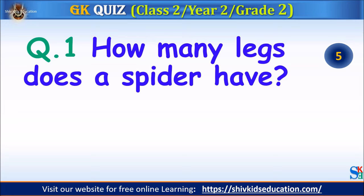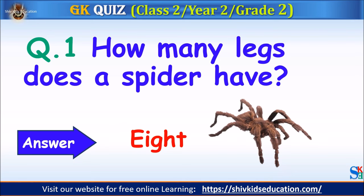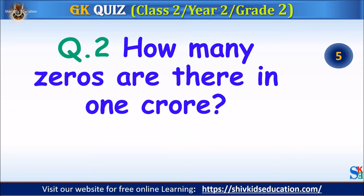Question 1: How many legs does a spider have? Your time starts. The answer is 8. Question 2: How many zeros are there in one crore? Your time starts. The answer is 7.